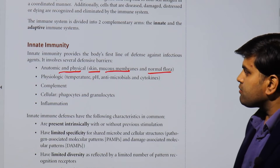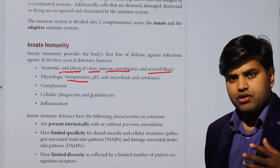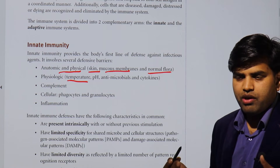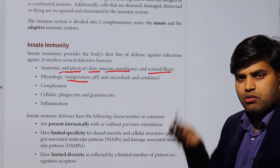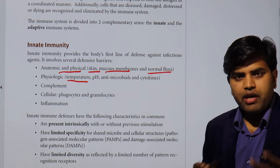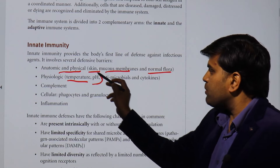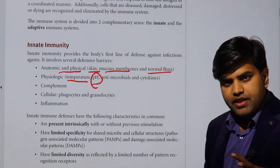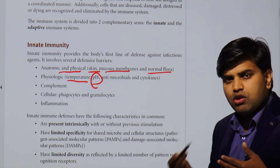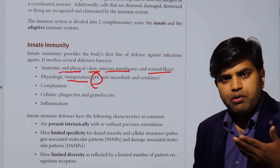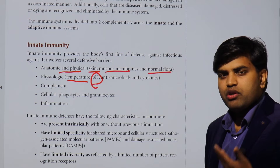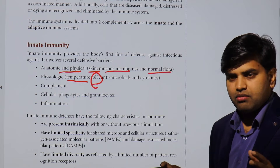There are also physiological barriers such as temperature. When there is high temperature, certain organisms cannot survive. During infection, the hypothalamic set point is raised, so due to raised body temperature some bacteria do not multiply. The stomach pH is highly acidic and kills the maximum organisms we eat through food, preventing pathogenic organisms from entering the intestine before killing the maximum of them.